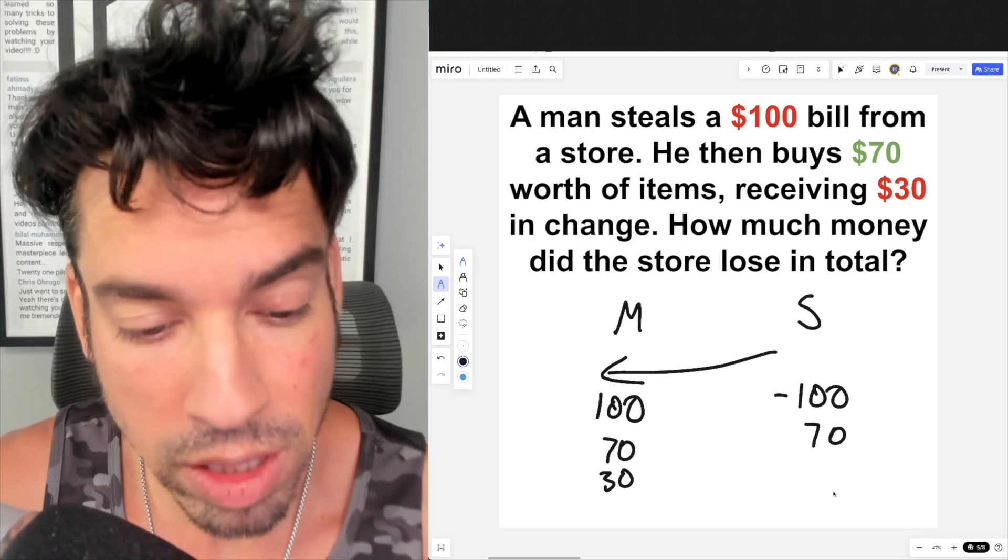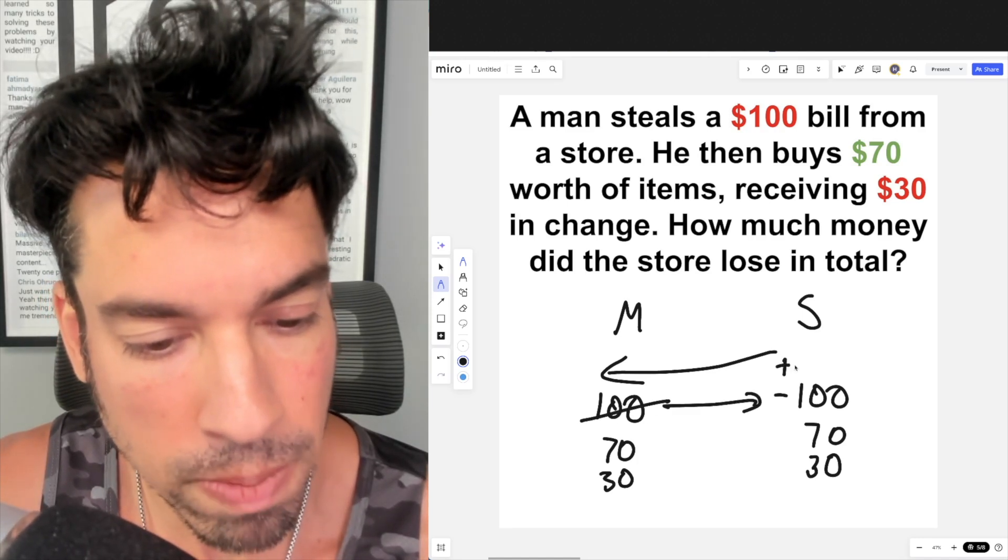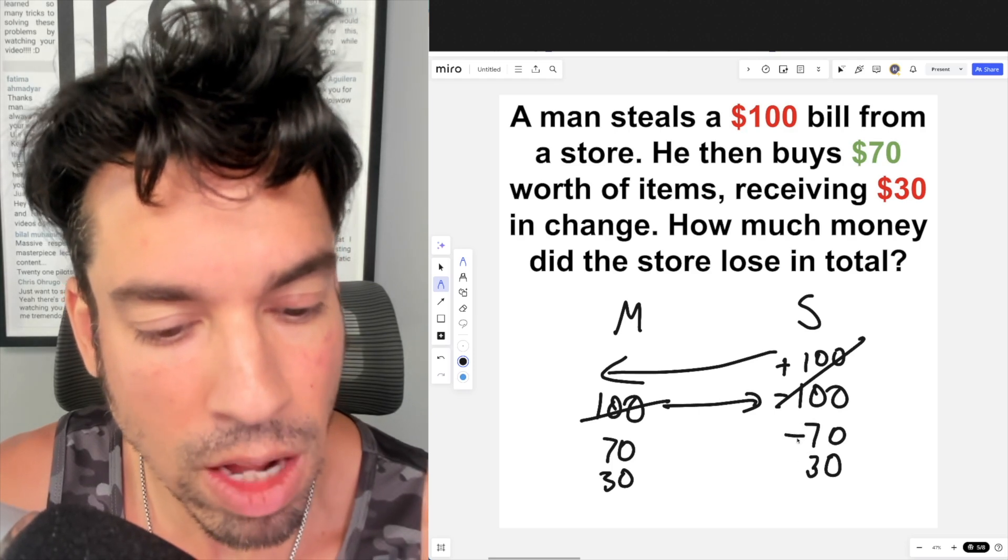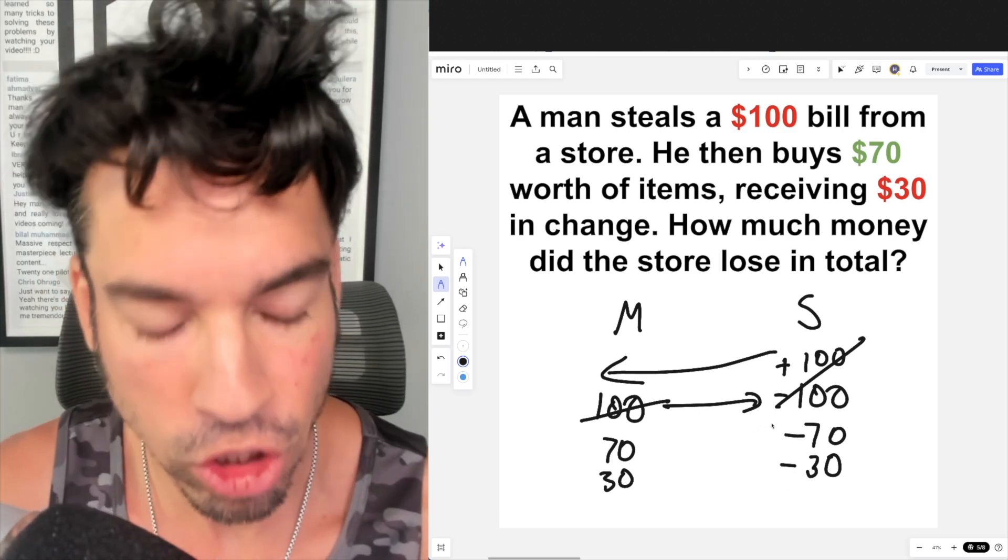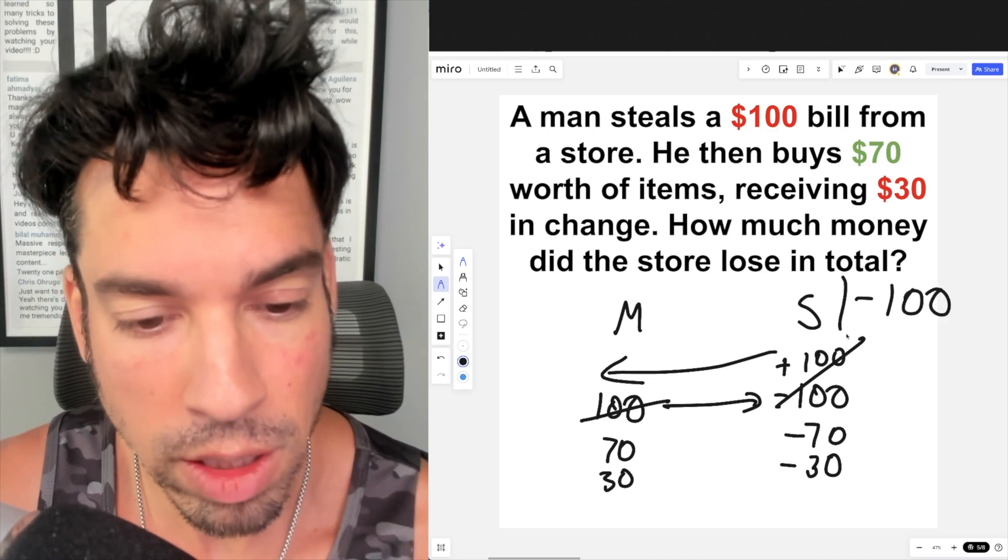And when he gets the $30 back, that store is not losing $30 because that $30 is part of that $100 bill that was given. So now the man has lost $100 because it's been given back to the store and that loss is out. But the store has now given $70 worth of goods and that $30 worth of change, so the store has lost a total of $100.